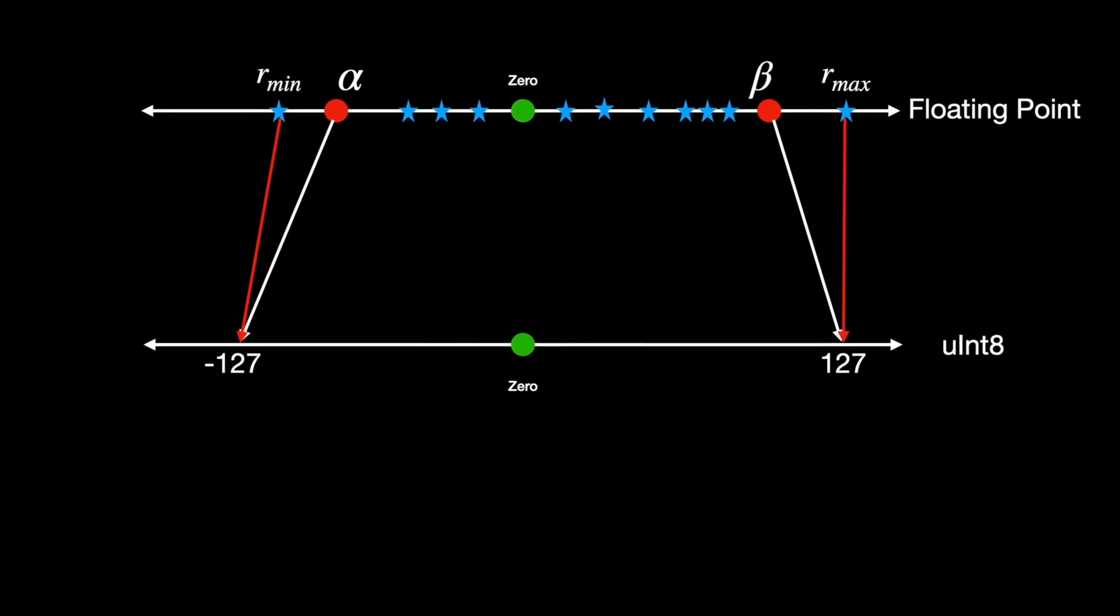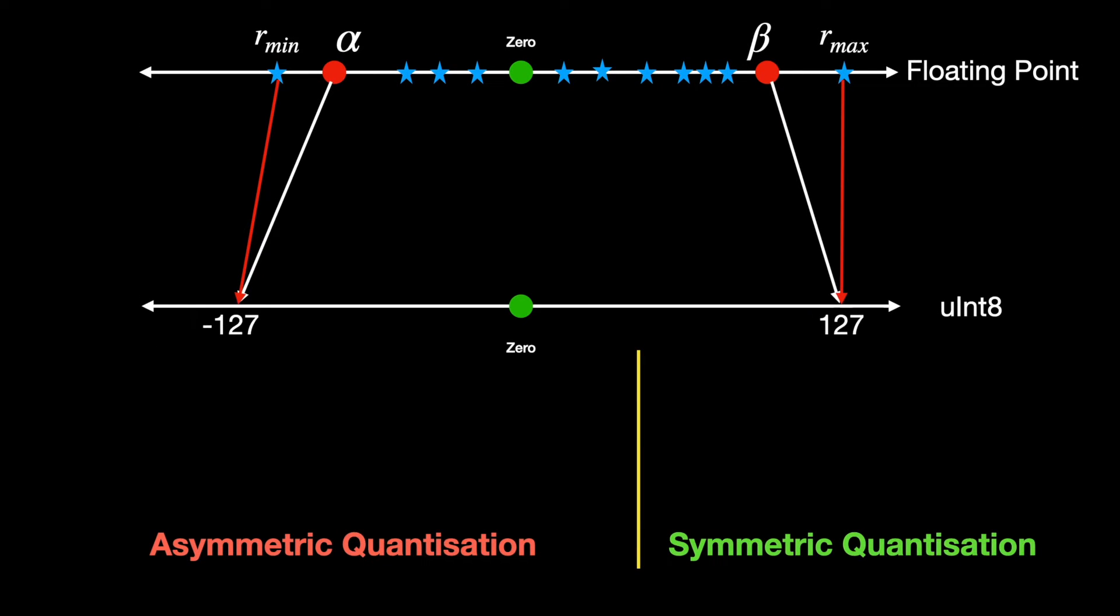In order to prevent excessive clipping, the easiest option could be setting alpha to be equal to rmin and beta to be equal to rmax. And we can happily calculate the scale factor using these rmin and rmax values. However, this may render the output to be asymmetric.